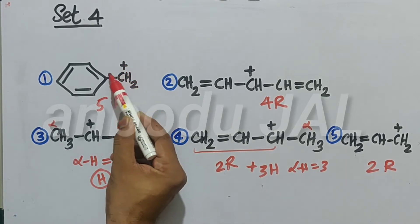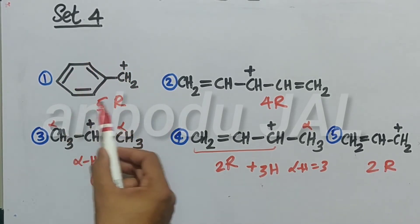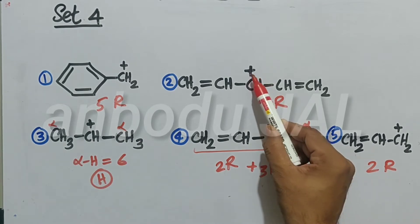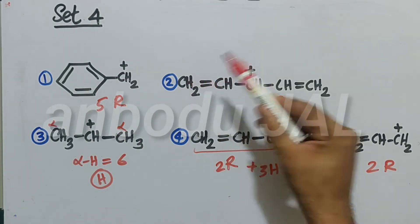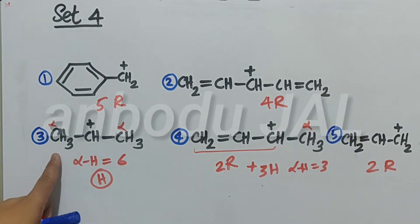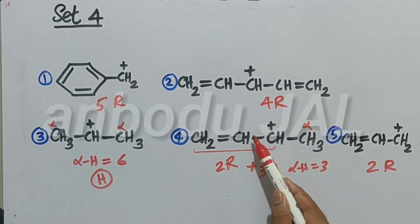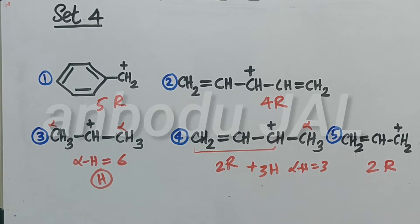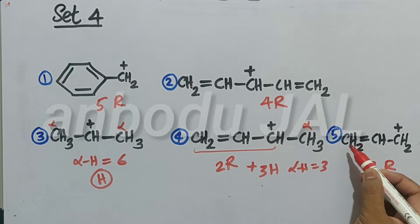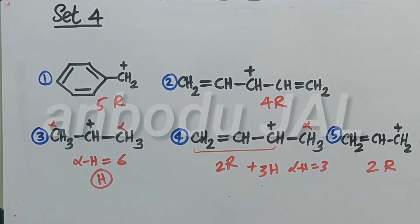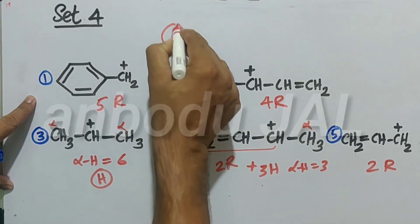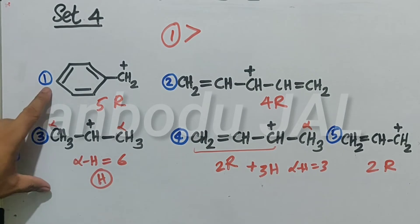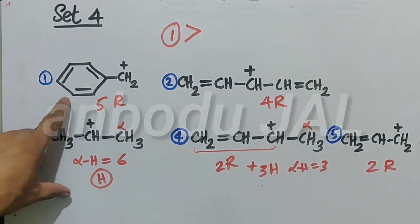The plus charge will be delocalized in this ring, and here the plus charge will be delocalized on this carbon or this carbon. Structure one has the maximum resonance structures — that is why the first structure is the most stable carbocation.